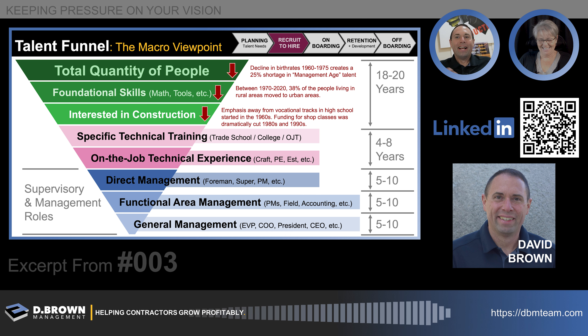They've also got to be interested in construction. Emphasis on vocational tracks in high school started getting pulled away in the 1960s as we pushed for more managerial roles, larger companies, and computer science. Then funding changes in the 1980s and 1990s dramatically cut shop classes. That's your first 18 to 20 years of life. Then you've got four to eight years of specific technical training and on-the-job experience before you're decent at what you do — so you're somewhere between 22 and 28 years old.